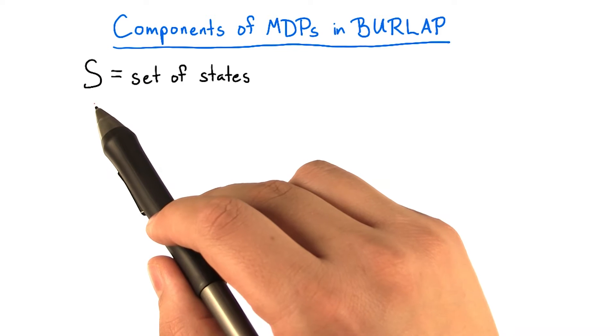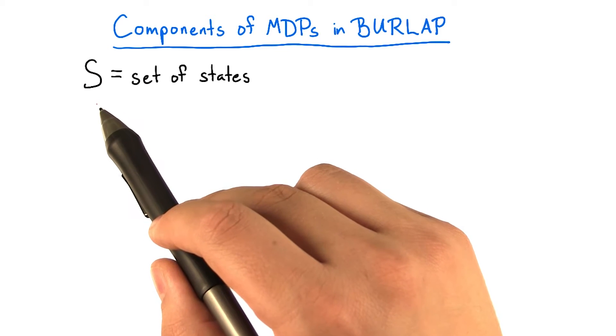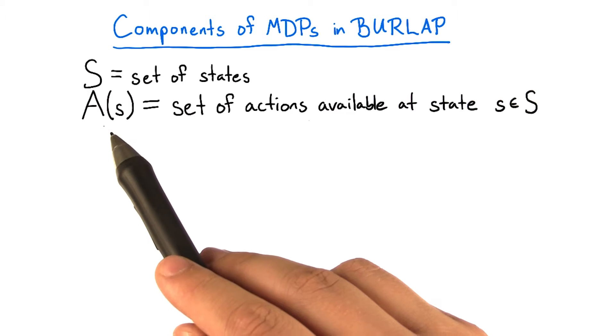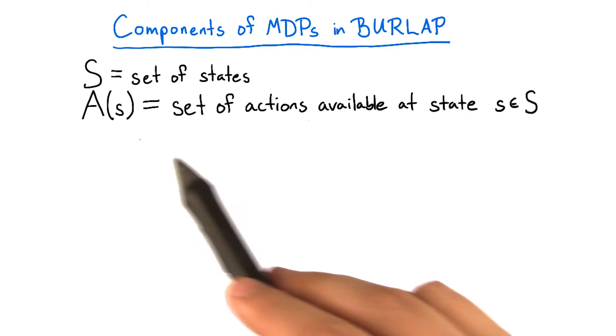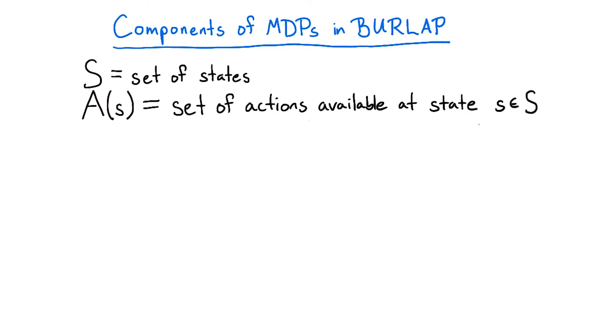The first component of an MDP is a set of states S that the system can be in. Associated to each state s in S is a set of actions A(s) that can be taken at the state s.